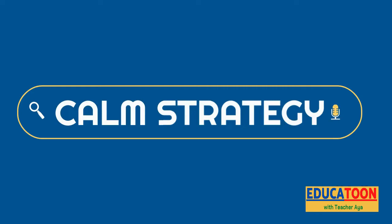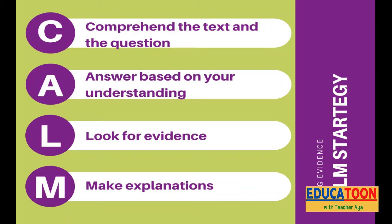So, how do we cite evidence? CALM stands for: C — Comprehend the text and the question; A — Answer based on your understanding; L — Look for evidence; and M — Make explanations.